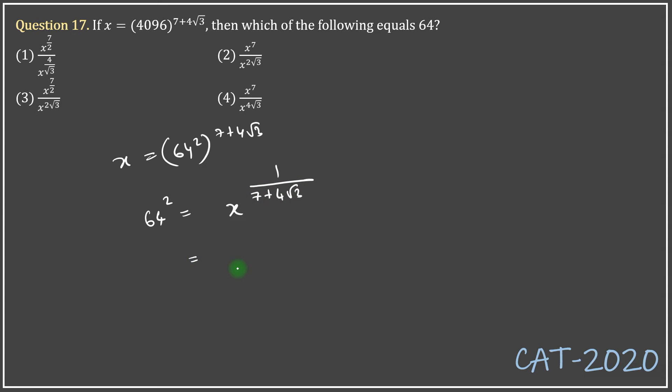Rationalizing the denominator of the fractional power, I get x to the power 7 minus 4 root 3. I take it that you know how to rationalize the denominator - multiply by 7 minus 4 root 3 in numerator and denominator.